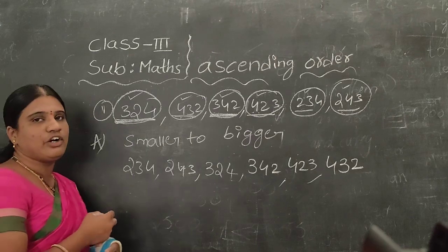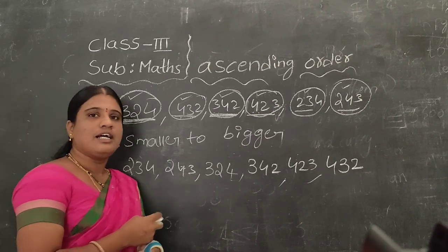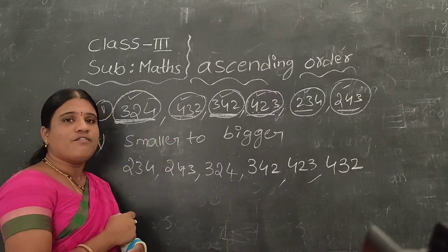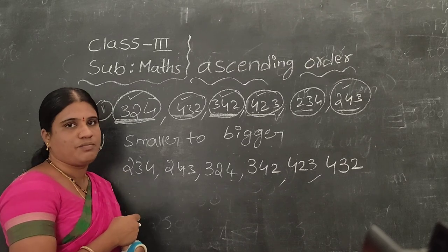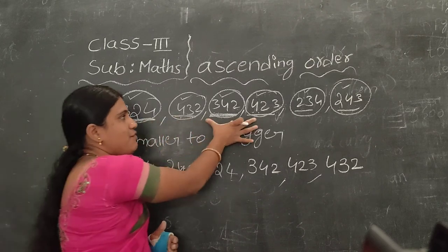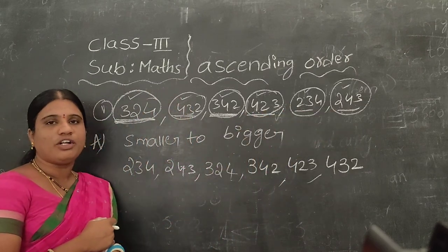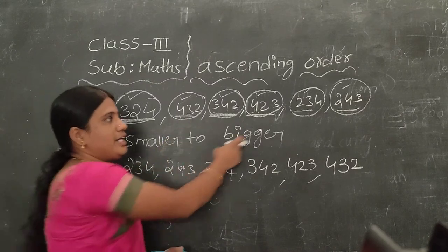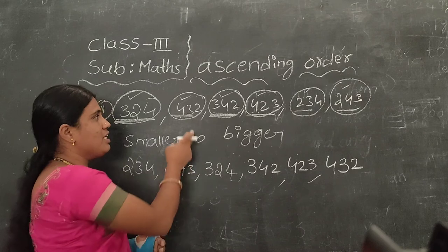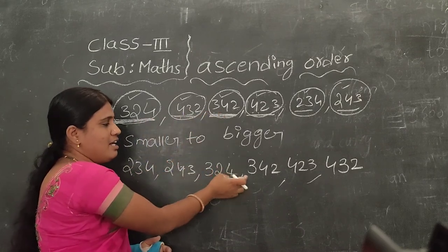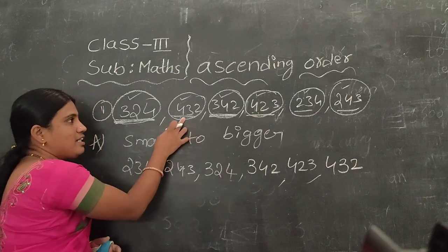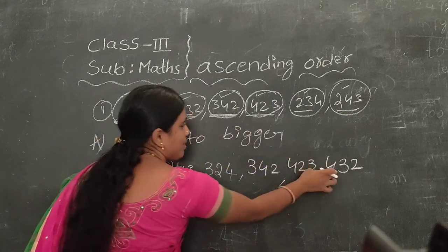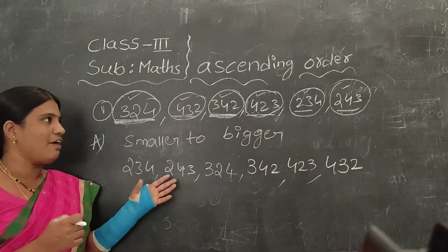Understood? Ascending order means we arrange numbers from small to big. From the given six numbers, first find the smallest. Here we have 300 numbers, 400 numbers, and 200 numbers. You know 200 numbers are the smallest, so write those first. Then write the 300 numbers smallest first, and then select the 400 numbers — write the smallest first and the remaining last.